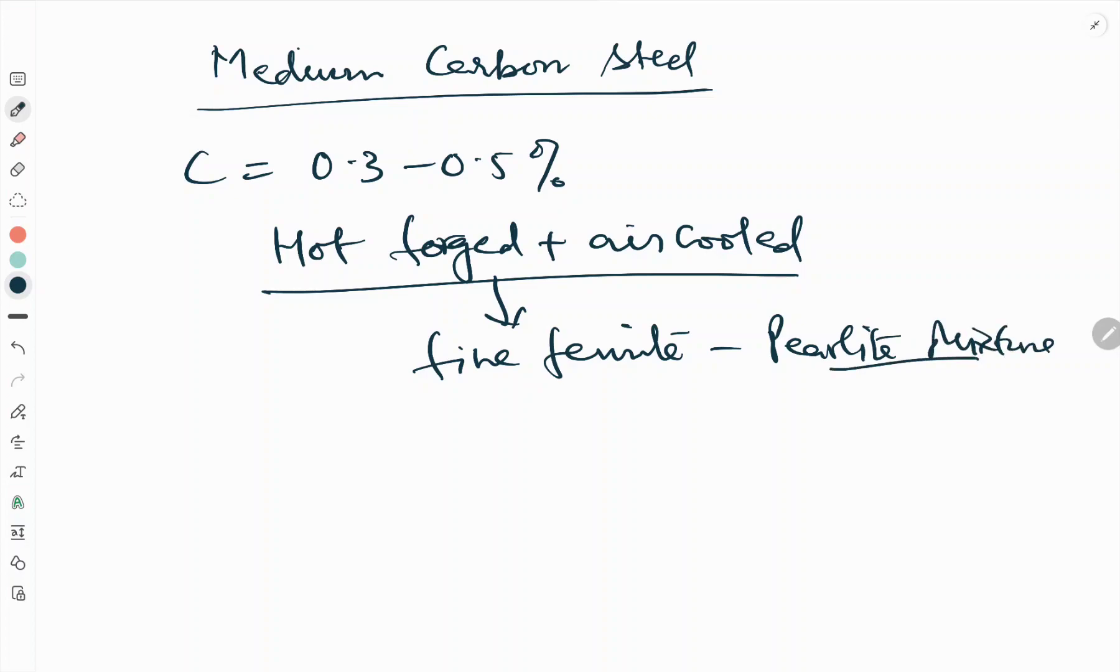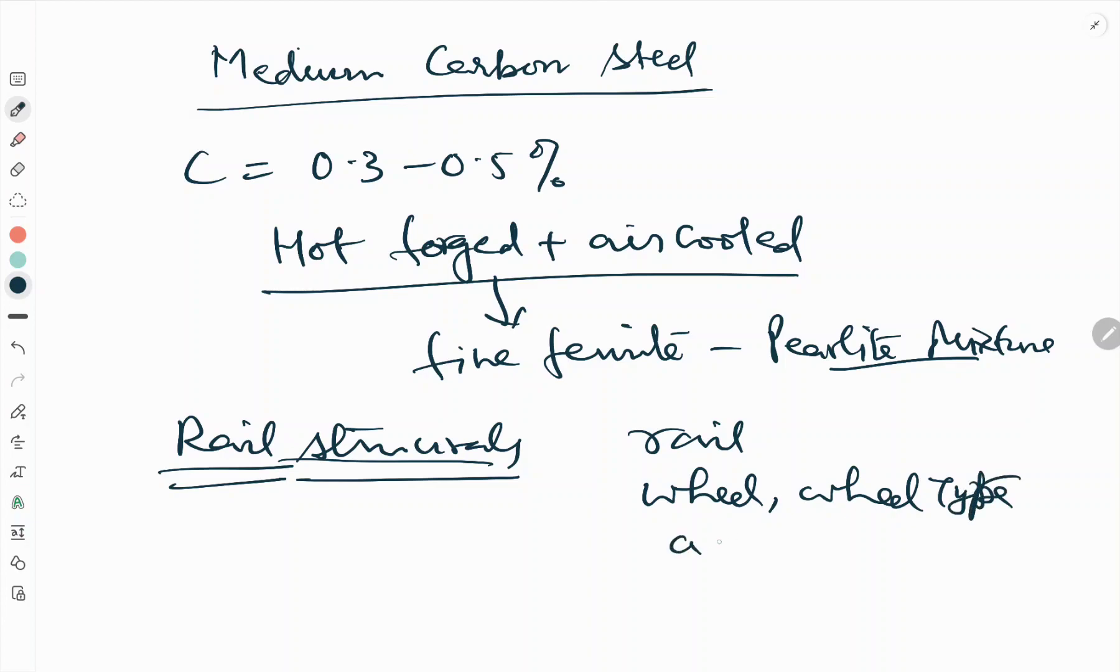The rail structurals in which this medium carbon steel is used most are the structural parts used for railways such as rails, wheels, wheel tire, and axles.